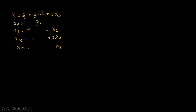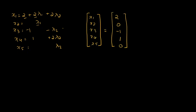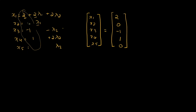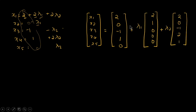So the general solution for all variables is: x1 = 2 + 2λ₁ + 2λ₂, x2 = λ₁, x3 = −1 − λ₂, x4 = 1 + 2λ₂, x5 = λ₂. In matrix form: (x1, x2, x3, x4, x5) = (2, 0, −1, 1, 0) plus λ₁ times (2, 1, 0, 0, 0) plus λ₂ times the corresponding column.